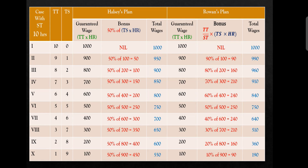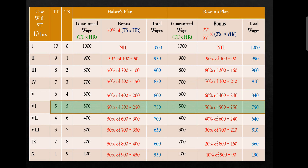Let's see the total wages and the graphical representation. In Halsey's plan, as time saved increases, the bonus increases at a constant rate — this shows an increasing straight line on the graph. Every additional hour saved adds 50 rupees of bonus. This increasing trend shows a straight line. But when we talk about Rowan's plan, there will be a curve form on the chart or graph.